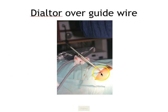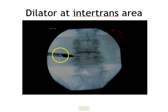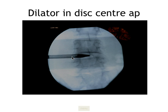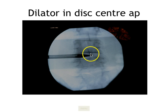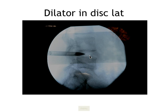We make a skin incision and introduce the dilator over the guide wire using its central hole. This dilator is a blunt instrument with two holes. We push it right up to the intertransverse area; the black tip of the dilator is 15 millimeters in length. We then tap the dilator right up to the center of the disc so the tip enters the disc — the 15 millimeters of the black portion is accommodated inside the disc. On the lateral view the dilator tip is confirmed to be in the posterior quadrant of the disc.